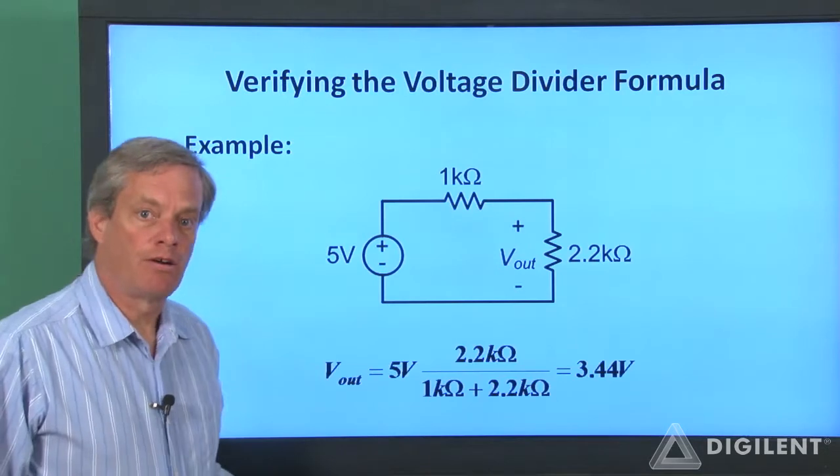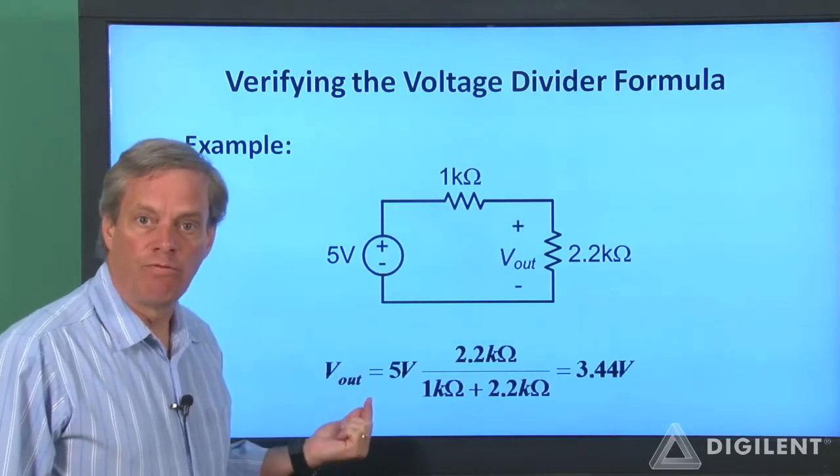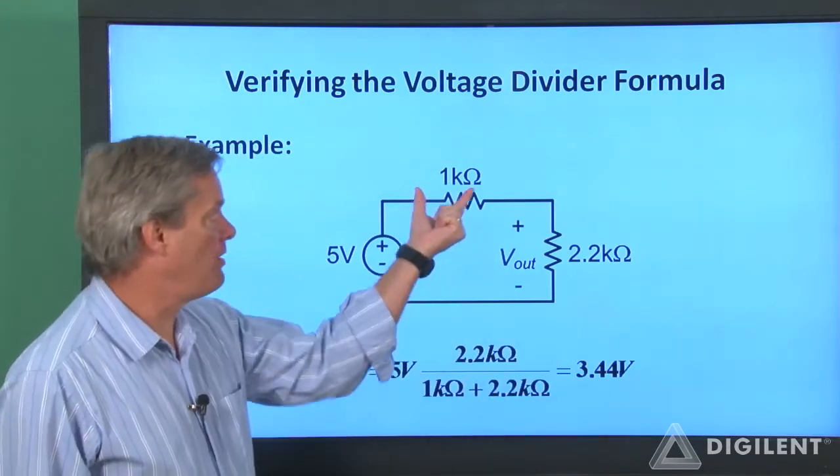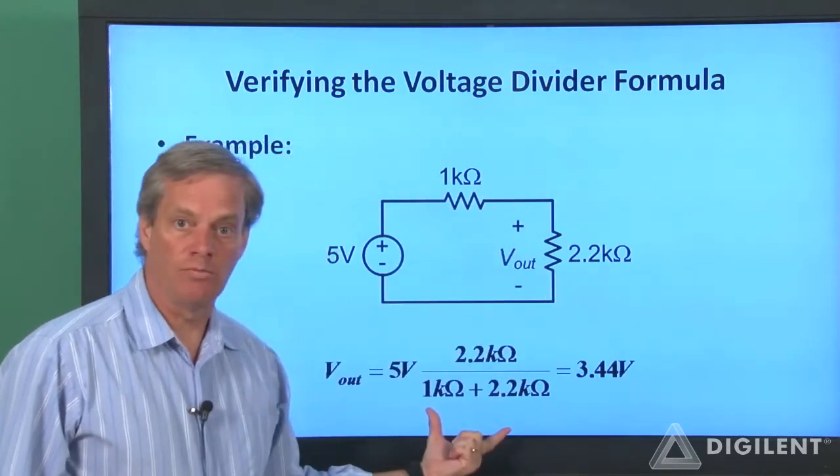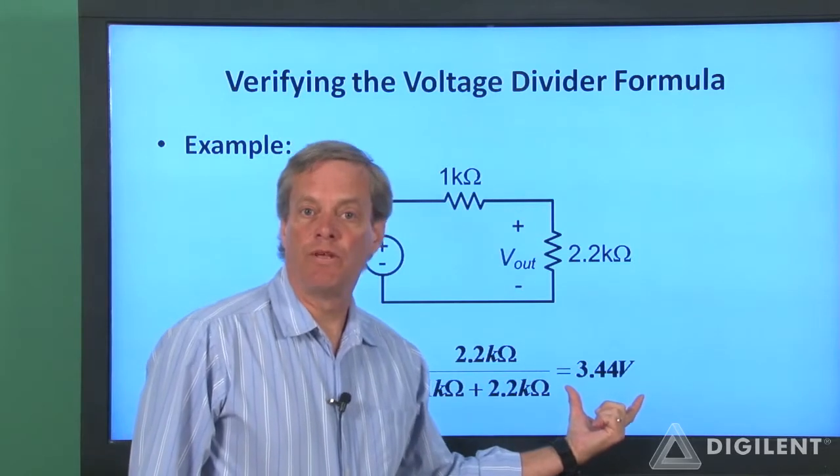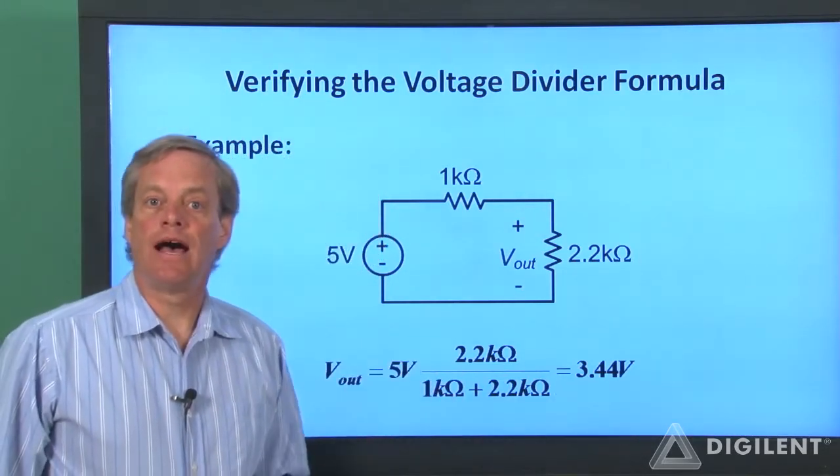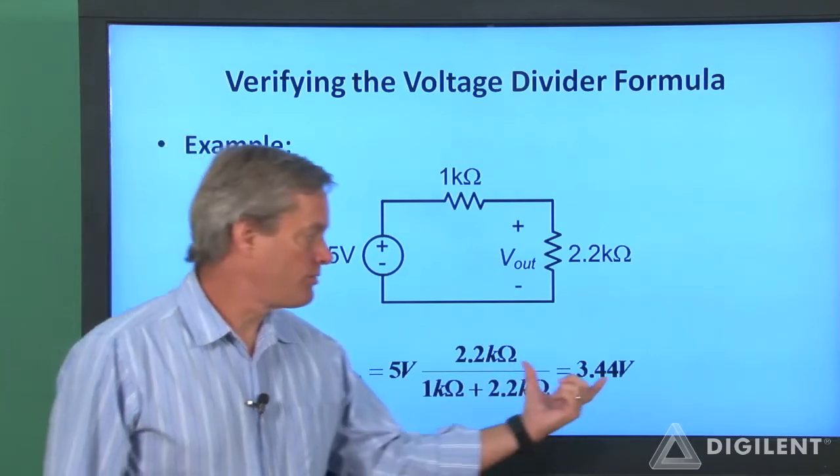Our voltage divider formula says that this measured voltage should be 5 volts times 2.2 kilohms divided by the sum of 1 kilohm and 2.2 kilohms. This turns out to be 3.44 volts. Now let's wire up the circuit and see how the measured response compared with our expectations.